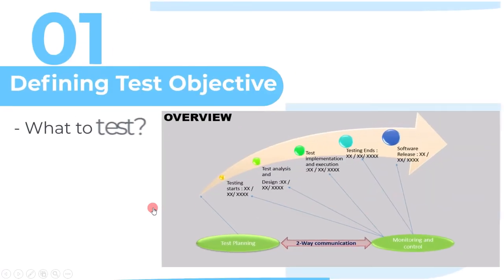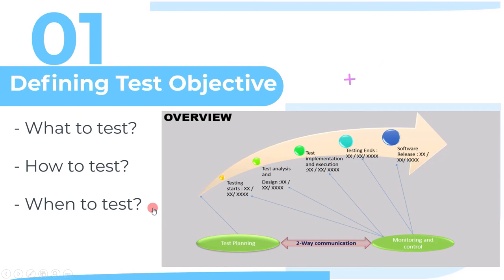The first main activity of test planning is defining test objective. Here we can answer some important questions such as what to test, how to test, when to test, and so on.